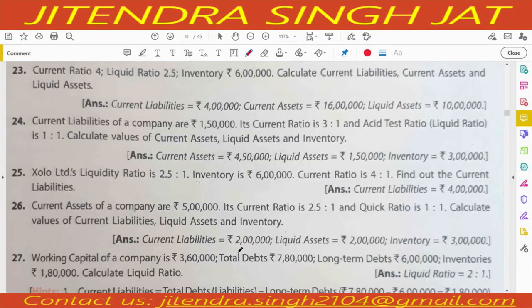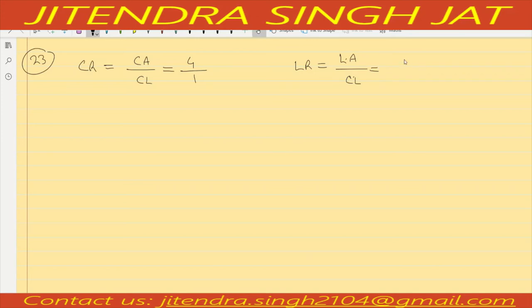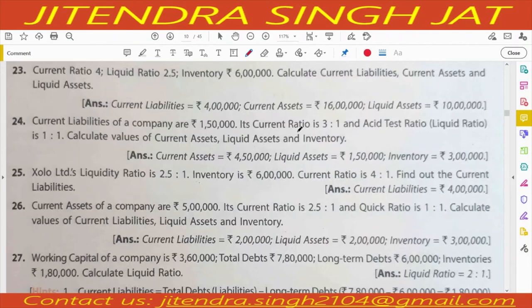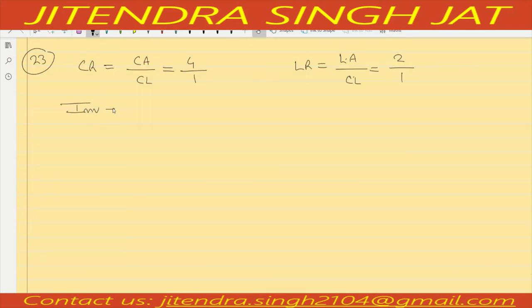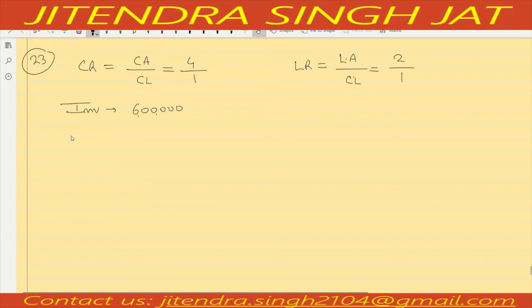Question number 23. Current ratio is 4, meaning current assets upon current liability equals 4 upon 1. Liquid ratio is 2.5, meaning liquid assets upon current liability equals 2.5 upon 1. Inventory is given as 6,00,000. Calculate current liabilities, current assets, and liquid assets.